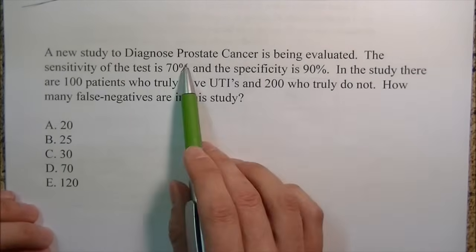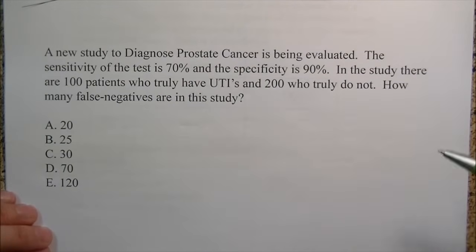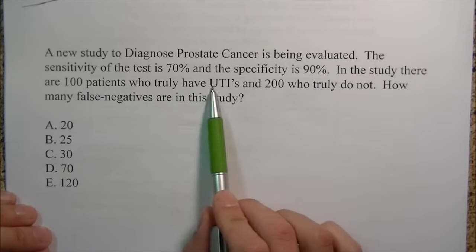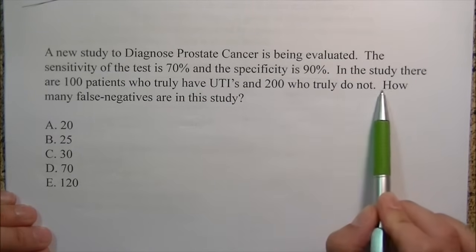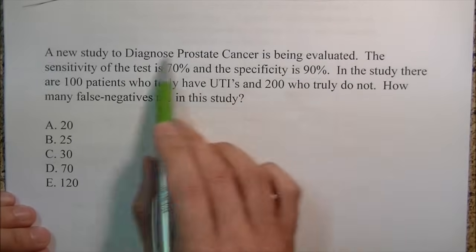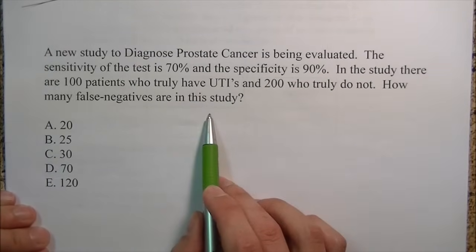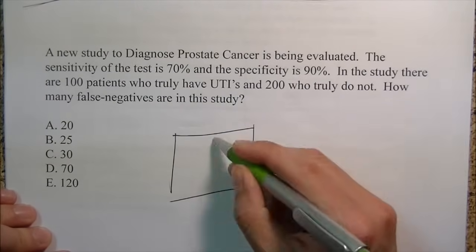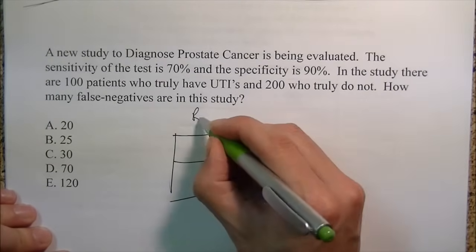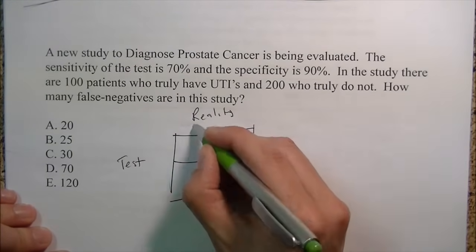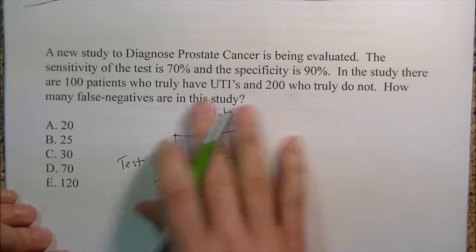A new study to diagnose prostate cancer is being evaluated. The sensitivity is 70% and specificity is 90%. There are 100 patients who truly have UTIs and 200 who truly do not. How many false negatives are there? When they don't give you the chart, you create it. Reality goes on top, the test goes on the side — positive, negative, positive, negative.